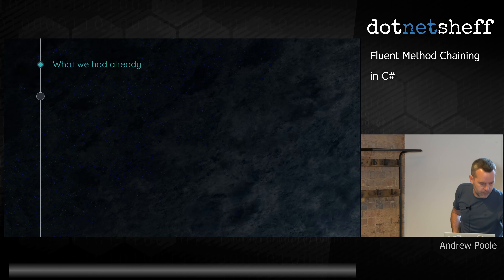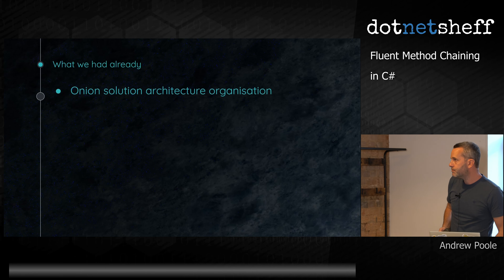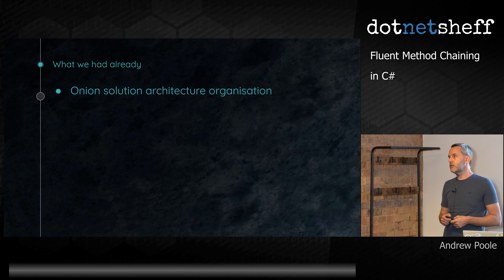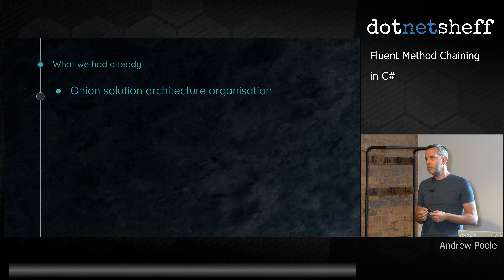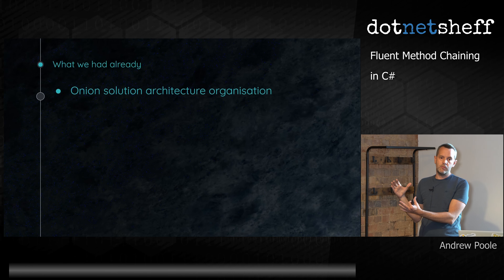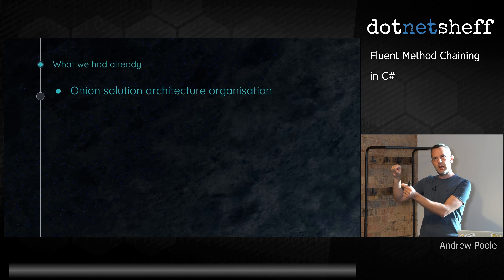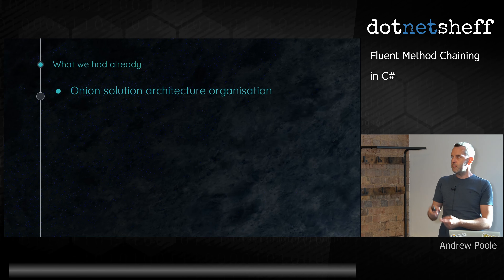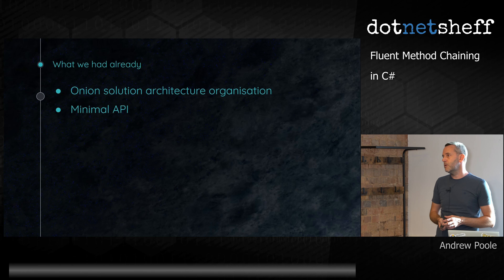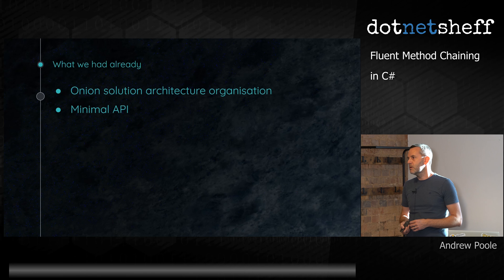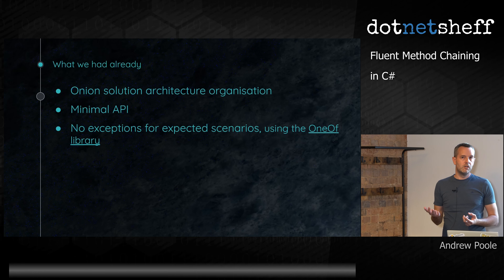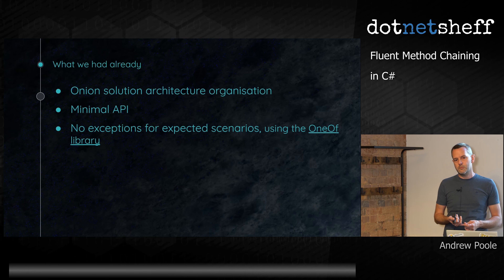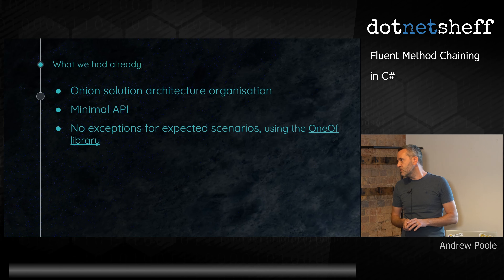We already had a kind of onion solution architecture. I'm sure everyone's seen that diagram — it's all over the internet. We have the domain in the middle with entities and value objects, then an application layer with business logic, then infrastructure, and then the very outermost thinnest layer would be the executable applications, which call straight into application as soon as possible. We were already using minimal API, and we already had this concept of trying not to use exceptions for expected scenarios. If the user gives us bad data in our API, we didn't want to use exception handling for that because exceptions don't perform particularly well and it's not exceptional — we expect the user to give us bad data. So for that, we're using the OneOf library.